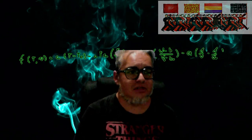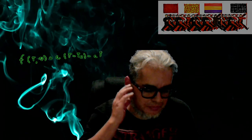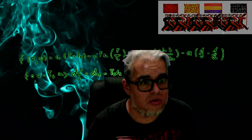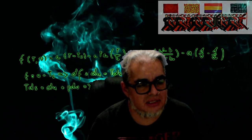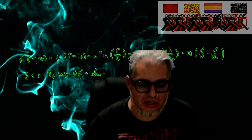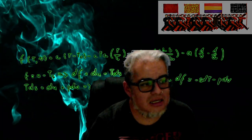Hola, ¿qué tal a todos? Bienvenidos a una nueva sesión del curso de Biología Matemática 2. Seguimos haciendo esta introducción teórica a los procesos de Markov. Esta será la última parte. Vamos a ver un par de ejemplos más, algunas propiedades que nos interesan. Y en la siguiente sesión vamos a ver ya el proceso de gating como un proceso Markoviano. Vámonos al pizarrón a ver qué tanto podemos avanzar y continuamos.